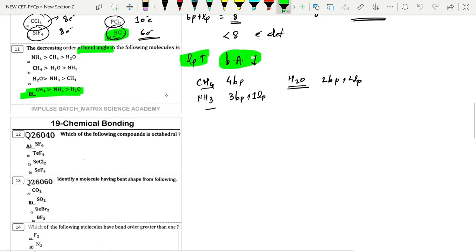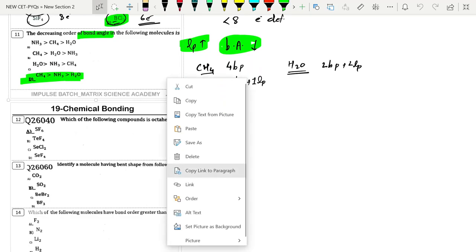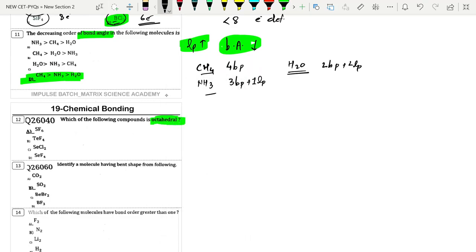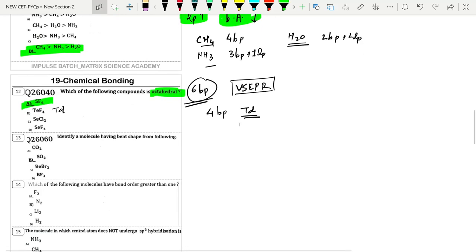Which of the following compound is octahedral? Octahedral means six bond pairs. When six bond pairs are present, octahedral geometry forms. The VSEPR table is very important. The option which is SF6 is octahedral. For four bond pairs we have tetrahedral geometry.